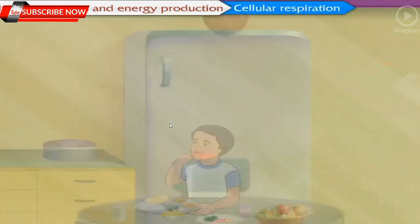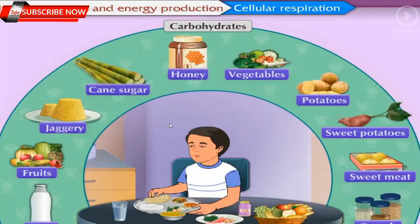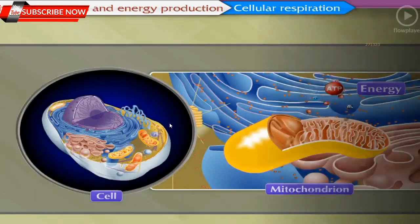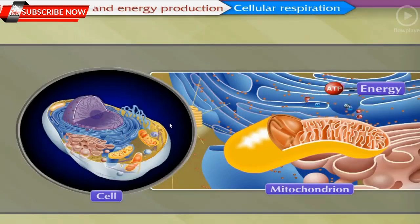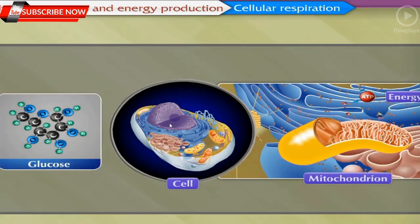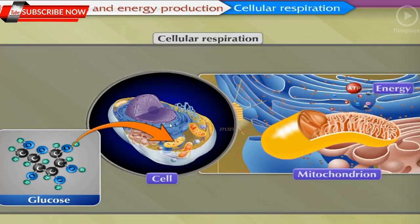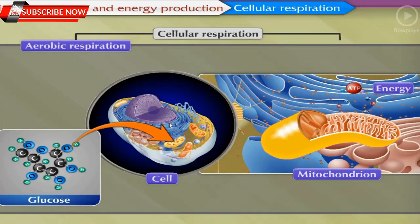Cellular respiration: Carbohydrates from the food we consume every day are mainly utilized for the production of energy required for our daily needs. This energy is obtained in the form of ATP. For this purpose, glucose, a type of carbohydrate, is oxidized step by step in the cells — this is called cellular respiration. Cellular respiration occurs by two methods: aerobic respiration and anaerobic respiration.